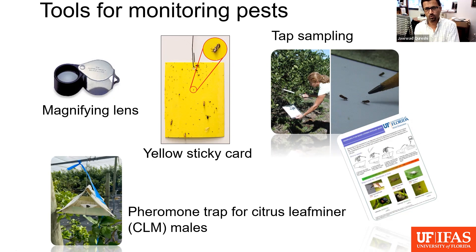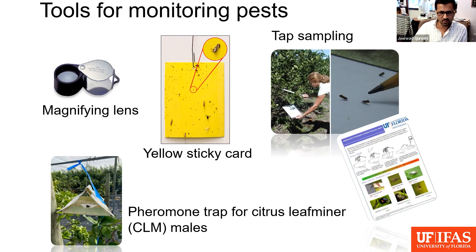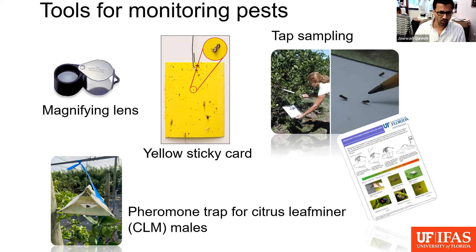The tap sample saves you from those issues if you need some instant information and can be done more effectively. Then we have pheromone traps, such as for citrus leafminer. They are very useful and provide good activity data on male populations. You know when populations start to arrive, and they can be used in traditional systems as well as under protective production systems — we have been using them under CUPS systems for the past several years.